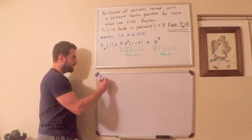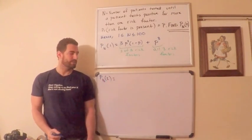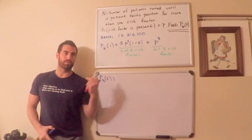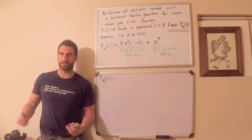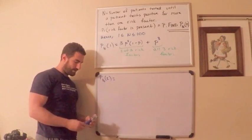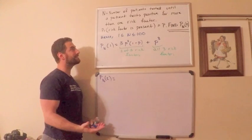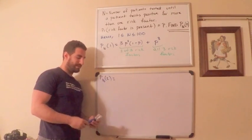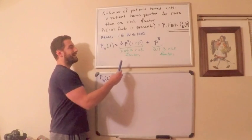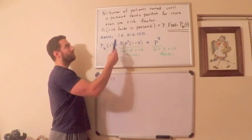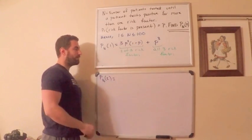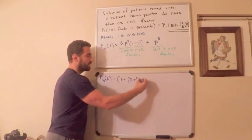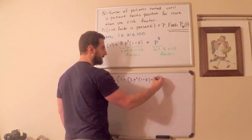Now let's look at P_N(2). This is asking: what is the probability that I need to test exactly two patients for this success to happen? For that to occur, the first person must have had at most one risk factor — they must have not had more than one. So that probability is one minus [3p²(1-p) + p³], which is the complement of having more than one risk factor.